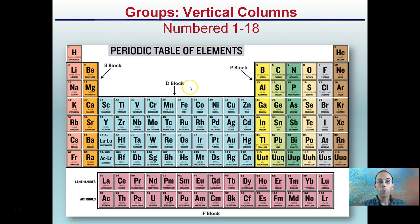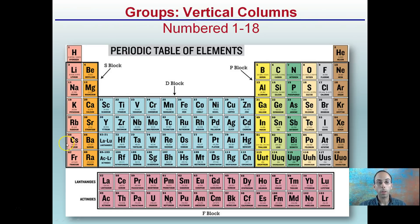Now, groups are vertical columns, also potentially referred to as families. You'll see here these vertical colored columns — so this is a group, which is a vertical column, which is also referred to as a family. We see them color-coded easily here.